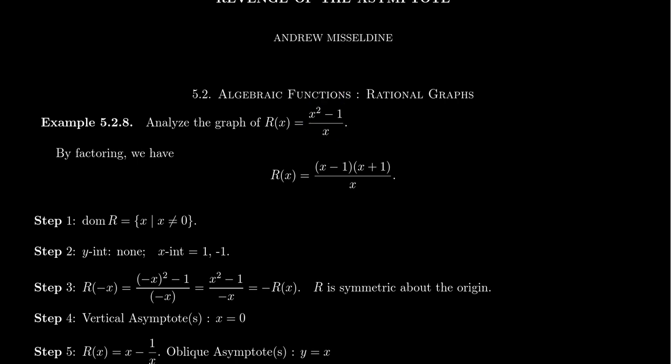The first thing I would want us to do is identify the domain. This will happen by factoring, so let's factor first. Let's factor the numerator x² - 1. We have a difference of squares: (x - 1)(x + 1). Then factor the denominator — well, it's just x, so it's already factored.